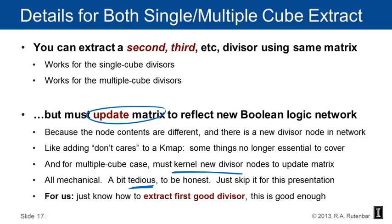In summary, the deep structure of a multilevel design — expressed via the algebraic model and through extraction of kernels and co-kernels — leads us to good single cube and multiple cube divisors. What remains is to understand mechanically how to find the prime rectangle, which will be covered next.